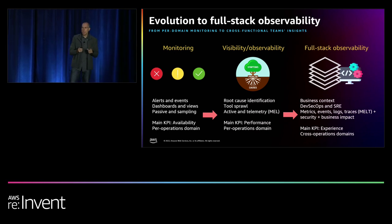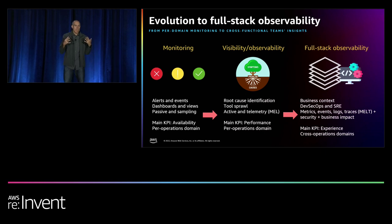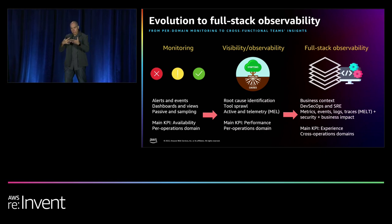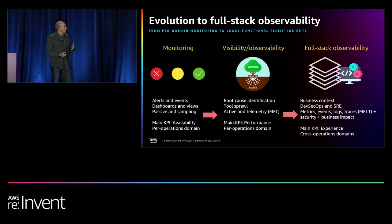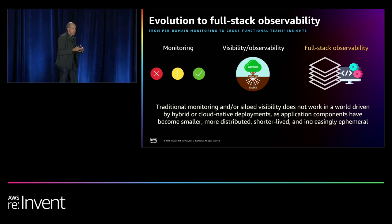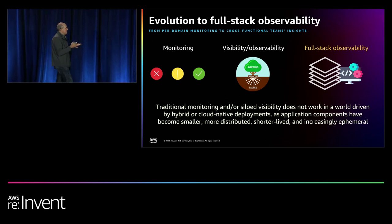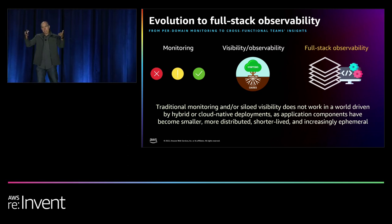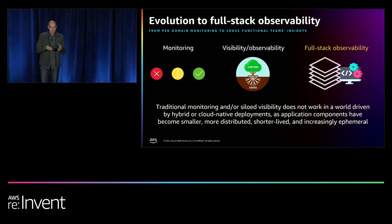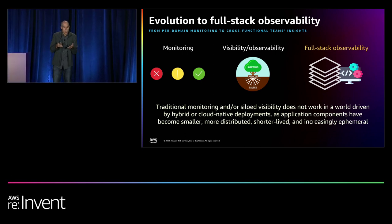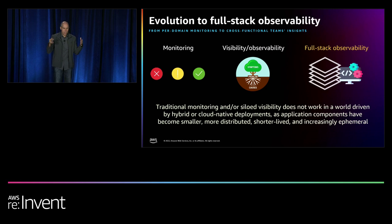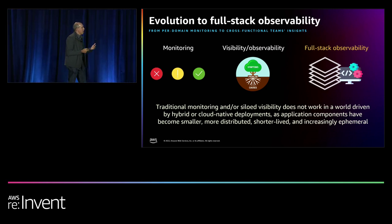The most important thing we're bringing to market is full stack observability across multiple ops domains — cross-correlation with experience as the main KPI. Traditional monitoring and siloed visibility don't work in a world driven by hybrid or cloud-native deployments. Application components these days, particularly cloud-native ones running on AWS, have become very distributed, ephemeral, short-lived, and sometimes stateless. You need to understand how industry evolution enables you to measure experience across all of this.